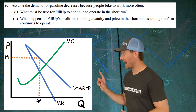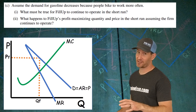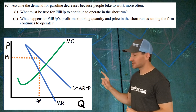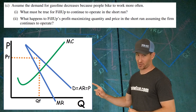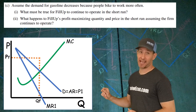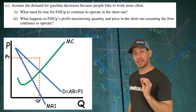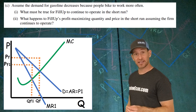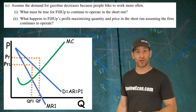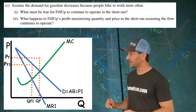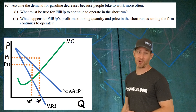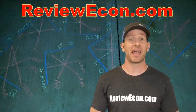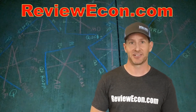For part C-II, when demand decreases, the demand curve shifts left, dragging the marginal revenue curve with it. That changes output and price — we get a new MR equals MC intersection at a lower quantity. Thanks to the leftward shift of the demand curve, we also get a new, lower price. So the answer is that both output and price decrease.